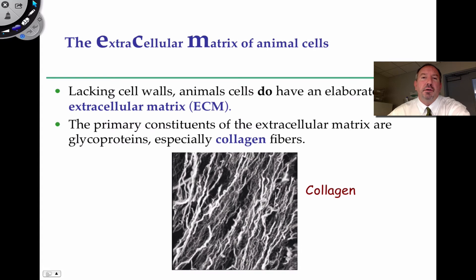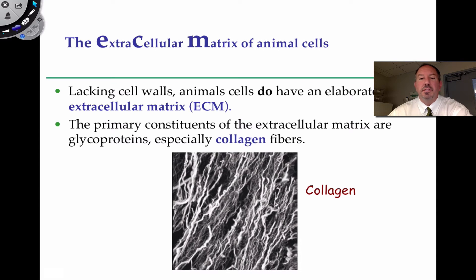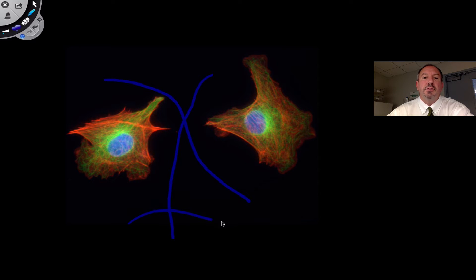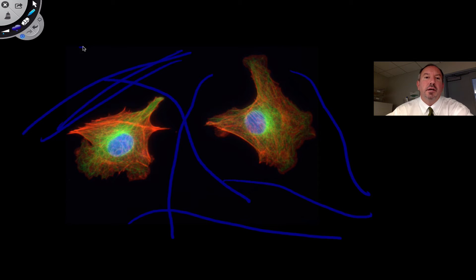Animal cells don't have a cell wall, but the outside of an animal cell is referred to as the extracellular matrix — 'extra' meaning on the outside. Though they lack a cell wall, they have an elaborate protein network between and on the outside of cells connected to the membrane. The primary protein in this matrix is collagen — a quaternary protein made up of three strands that is also very rigid and strong, though it's a protein rather than a sugar. Fibroblast cells secrete lots of collagen into the extracellular matrix.